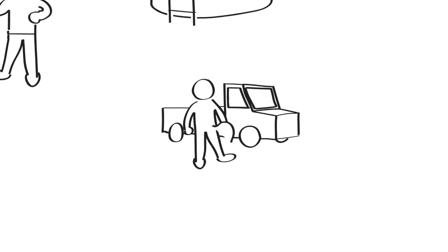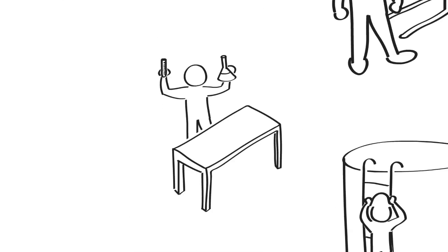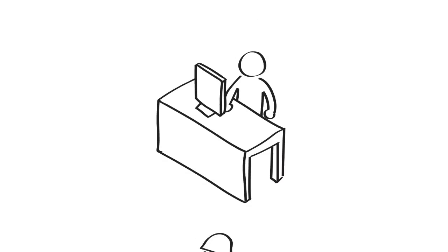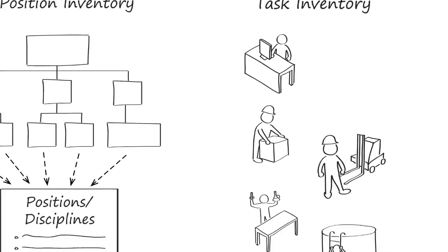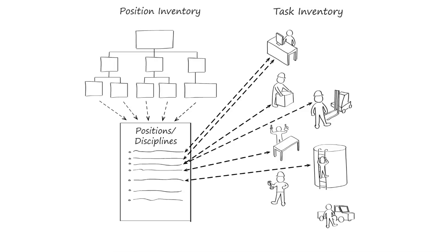These are the jobs people in the company do, and typically the task can be broken down into a manageable number of steps. This may seem obvious, but it needs to be documented. More than one position may perform the same or nearly identical tasks. For example, office workers in different departments may have different job titles, but they're likely all doing very similar tasks. And a person in one position might be doing multiple tasks. So the hazard assessment process needs to start by connecting a comprehensive list of positions to a list of all the possible tasks.